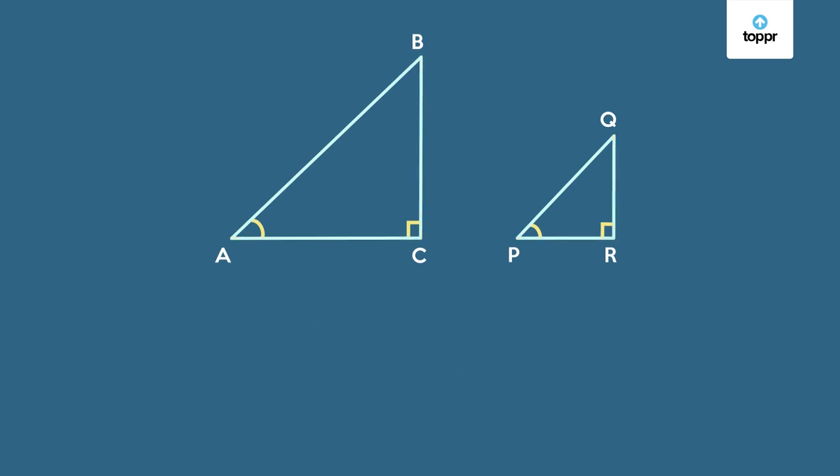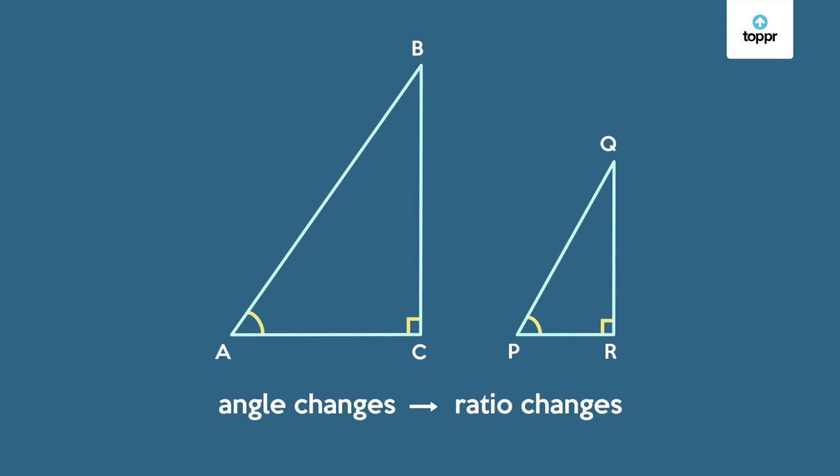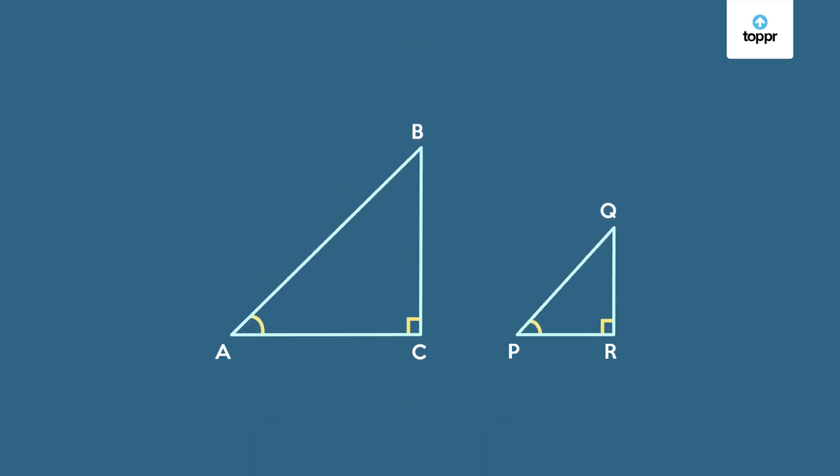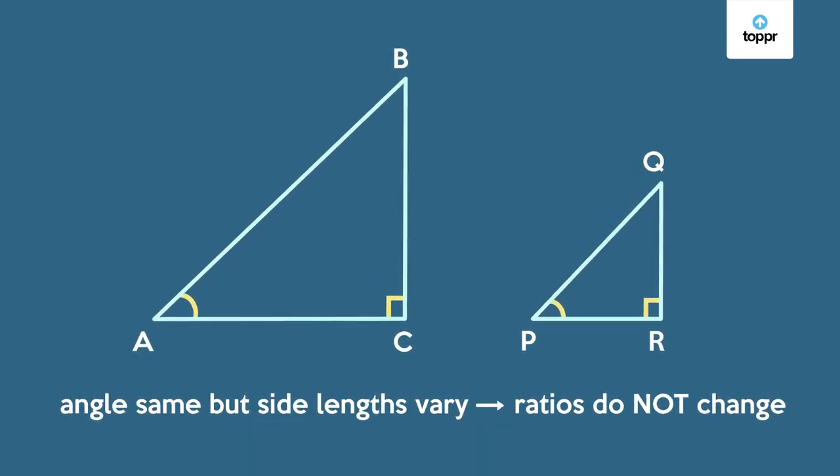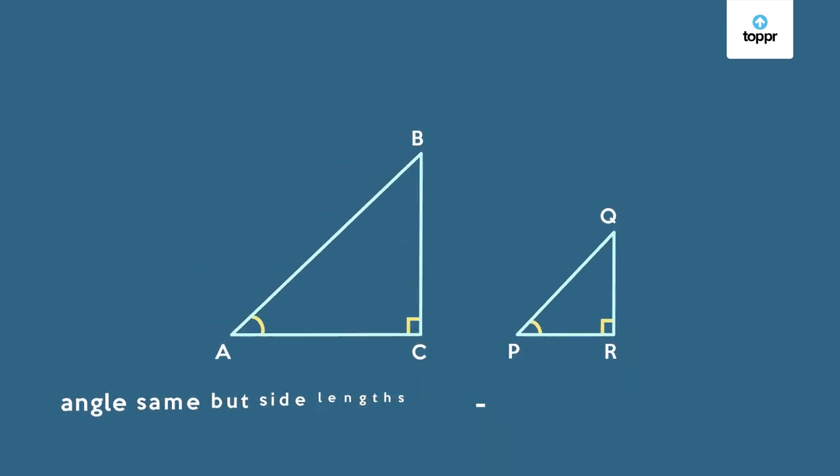Also, these ratios depend only on the acute angle A or P. The ratios change if the measure of the acute angle changes, but they do not depend on the size of the right-angled triangles. So we now have the answer to the question we started with.